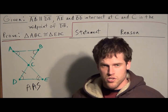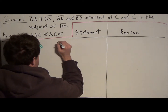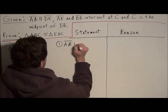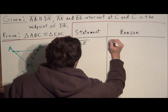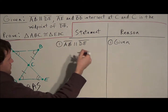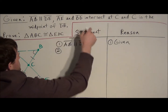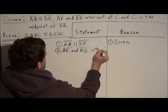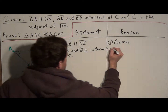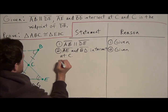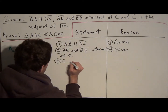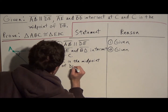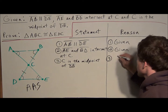Now we write out the proof. Statement one: AB is parallel to DE — reason: given. Statement two: AE and BD intersect at C — reason: given. Statement three: C is the midpoint of DB — reason: given. Starting by listing all the given information helps us structure the rest of the proof.